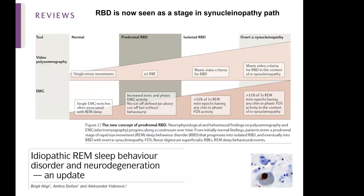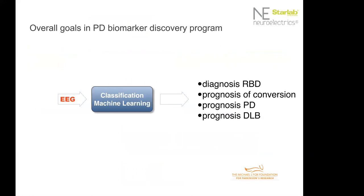So the problem, now that we have this picture of RBD being seen as a stage in synucleinopathy, is to try to classify, to understand, to prognose what will happen to these people. So in the classification tasks that I will be discussing here, we have mostly the task of understanding which people will convert to PD after they had been diagnosed as RBD. And the input data is EEG data and the technology is machine learning.